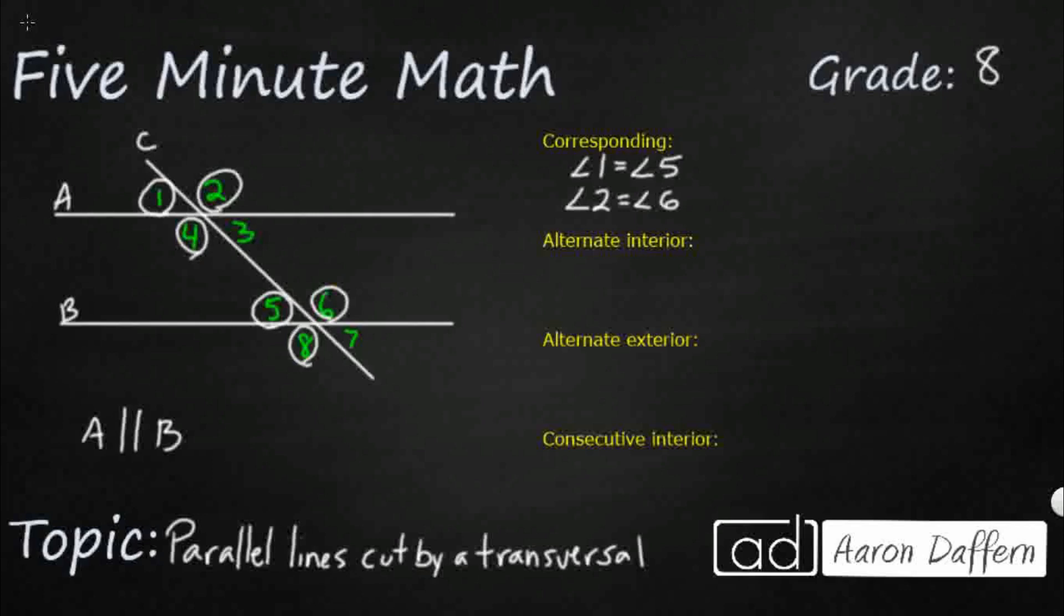So angle 4 is going to be equal to angle 8. Those are both going to be the same obtuse angles. And then angle 3 is going to be equal to angle 7. So those are what we call corresponding angles, and it happens just because that line cuts those two parallel lines.